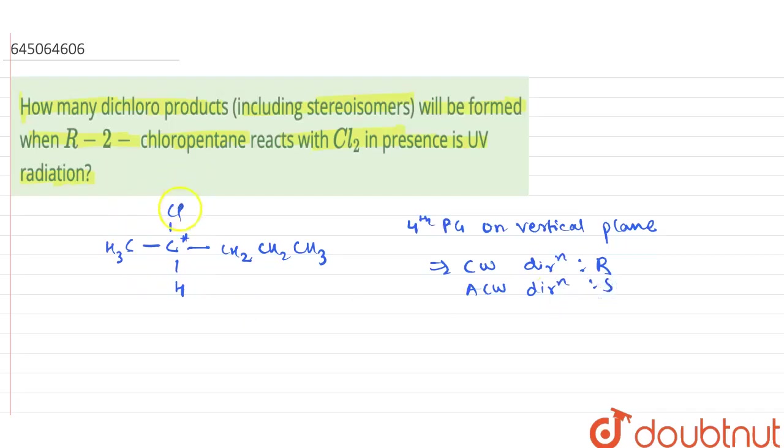So if I assign the priority group, priority will be first given to Chlorine. So therefore, 1. Then this is the larger group 2, 3 and 4.